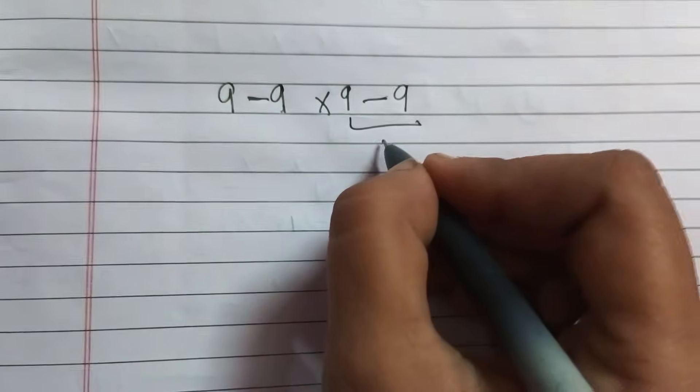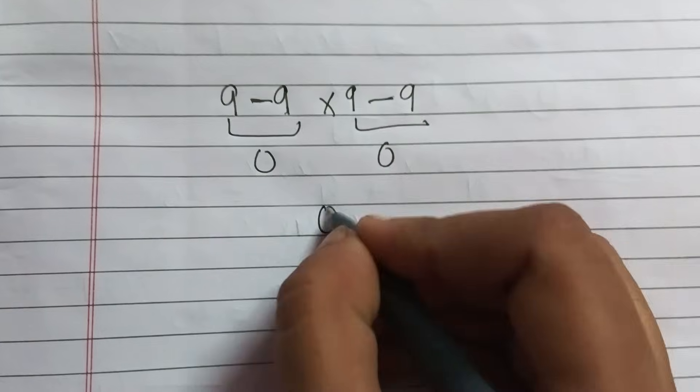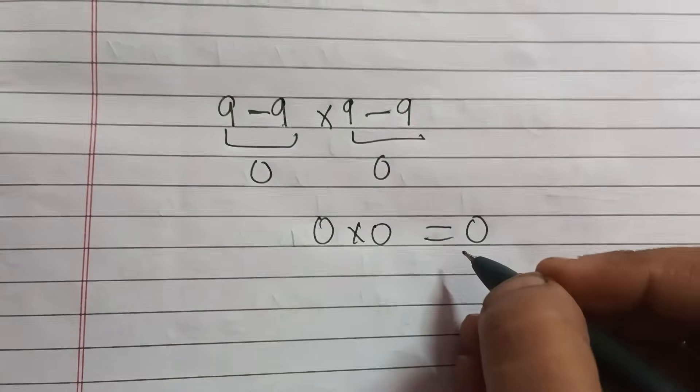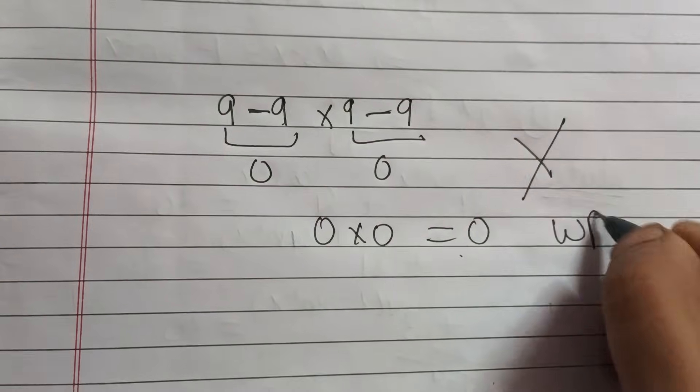So, 9 minus 9 is 0, and 9 minus 9 is 0, and 0 times 0 is also 0. Now, if you get answer 0, then your answer is totally wrong.